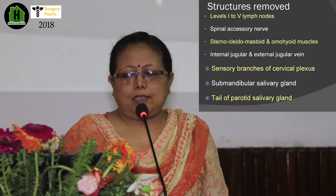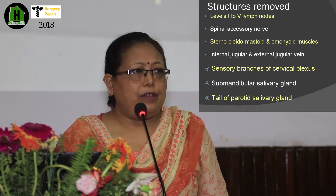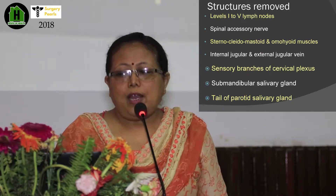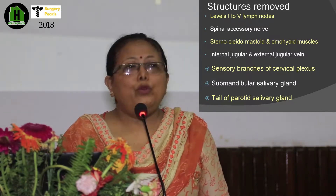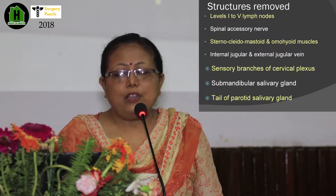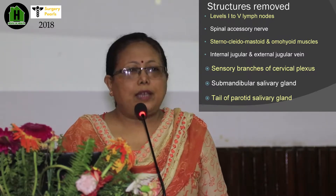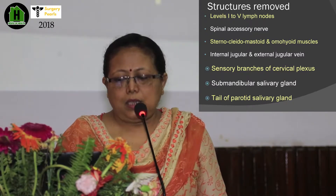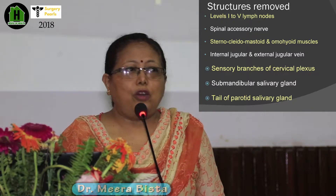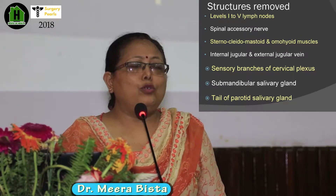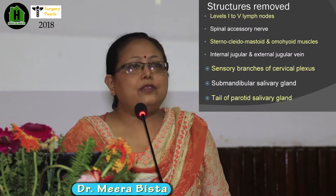Structures removed in radical neck dissection are: levels 1 to 5 lymph nodes, spinal accessory nerve, sternocleidomastoid muscle, omohyoid muscle, internal jugular vein, external jugular vein, sensory branches of the cervical plexus, and submandibular salivary gland. The parotid gland is not removed — only the tail of the parotid. If the parotid is removed, it becomes extended radical neck dissection.